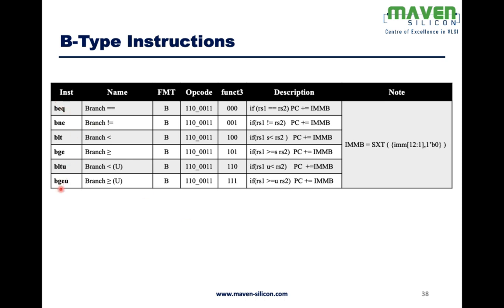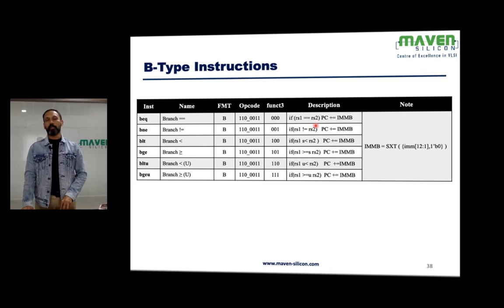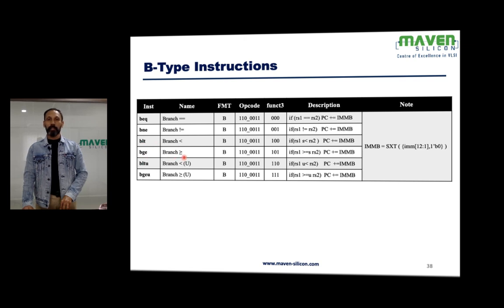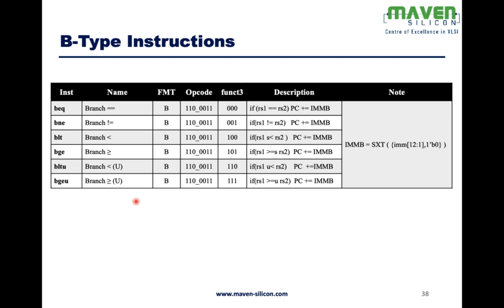There are different kinds of branch instructions. Branch equal (BEQ) checks if source register 1 equals source register 2. Branch not equal (BNE) checks if they are not equal. When any condition is true, PC = PC plus immediate offset. Branch less than (BLT) and branch greater than or equal to (BGE) are also available. There is no branch greater than — you always swap the operands instead. There are also unsigned variants: BLT unsigned and BGE unsigned.